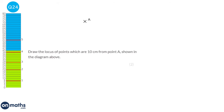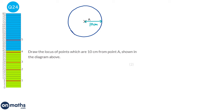To find the locus of points 10 centimetres away from a point, measure 10 centimetres on a pair of compasses, place the point at A, and draw a circle. The radius here should be 10 centimetres. Try to get the circle as neat as possible — don't push down too hard, and move the page around with the compass stationary.